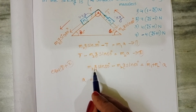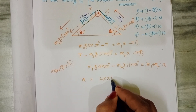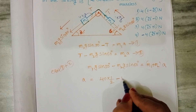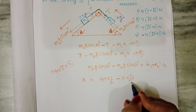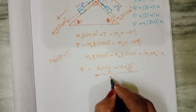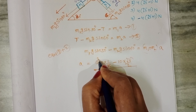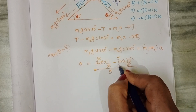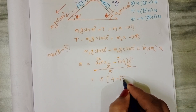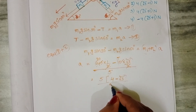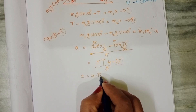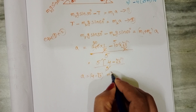So acceleration A equals: mass of first block 4 kg times g=10, which is 40 times sin 30° (= 1/2), minus mass of second block 1 kg times 10 times sin 60° (= √3/2), all divided by M1 plus M2 = 4 plus 1 = 5. Taking 5 common: 5 times (4 minus √3) divided by 5. The 5's cancel, so acceleration equals 4 minus √3 m/s².